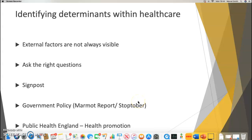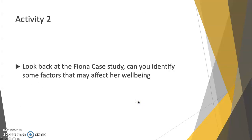I'm running out of time. Your next activity is to look back at Fiona's case study and identify some of the factors that affect her well-being — I'll put up the case study again under activity two. Once you're done with this video, click onto the Zoom link and write down any questions you have. It's only 15 minutes so I'm sure I haven't explained everything fully — please ask any questions and we can have a discussion and a quick catch-up to see how you're getting on. Bye for now.